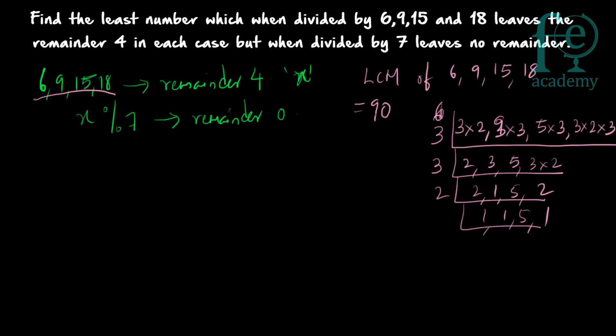We know that when x is divided by 90, we will get remainder 4. The reasoning is: x divided by each of 6, 9, 15, and 18 gives remainder 4, so x divided by their LCM (which is 90) will also give remainder 4. This is common sense — if x leaves remainder 4 when divided by each of these numbers, it also leaves remainder 4 when divided by their LCM.